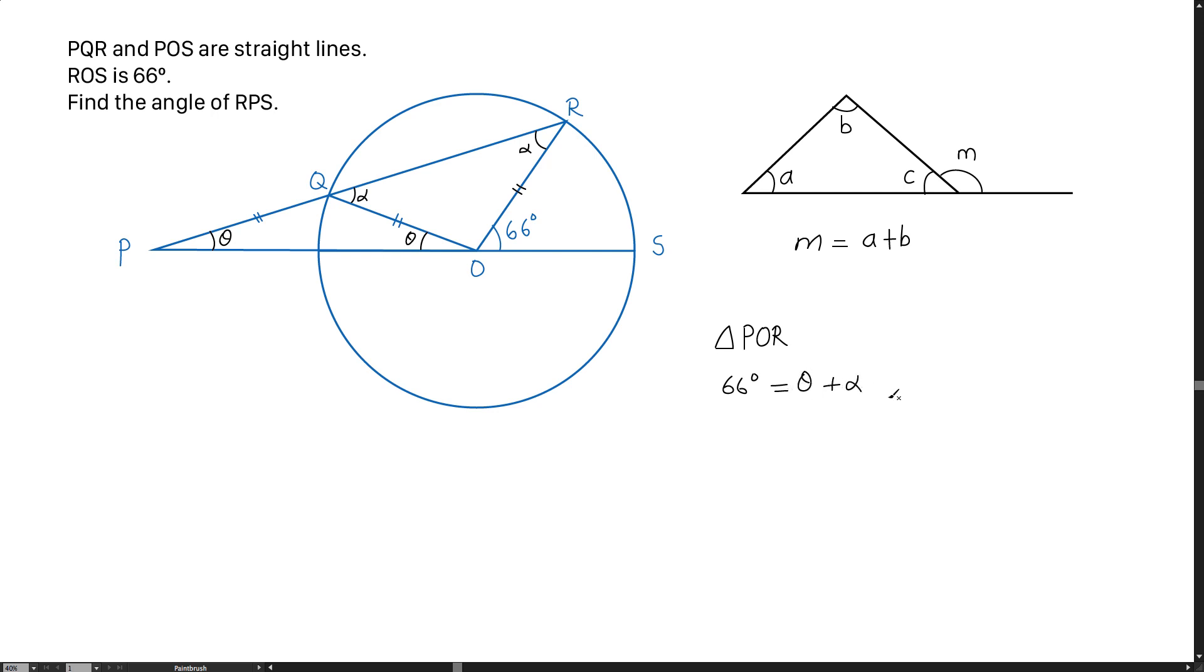And by looking at another triangle, which is the smaller one, POQ. The result that we are getting here is actually alpha, which is the sum of the other two angles, theta. And we are getting 2 theta by adding up together.